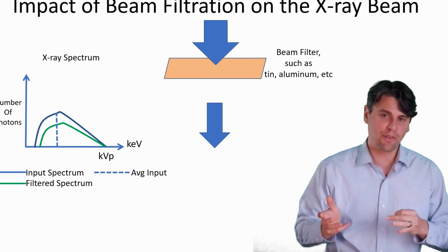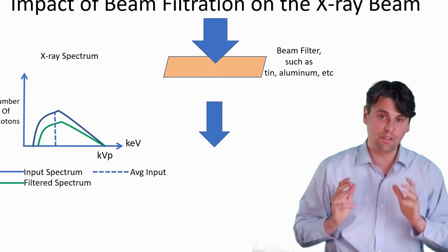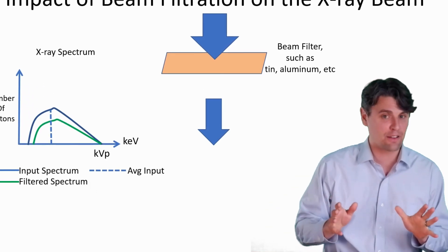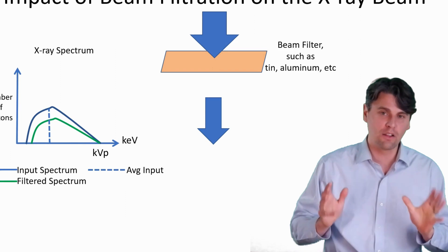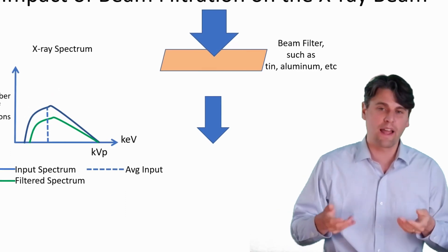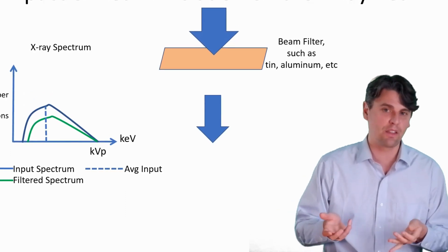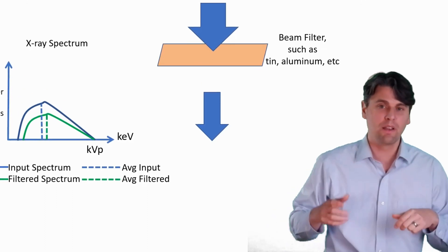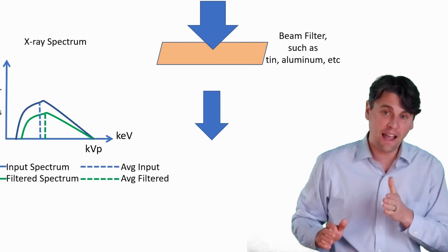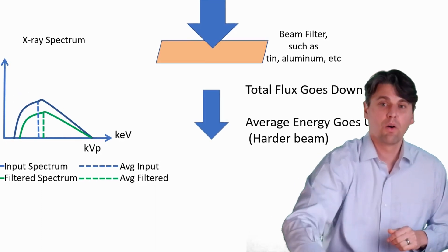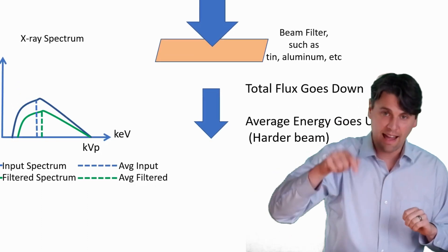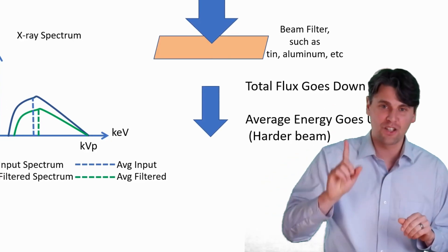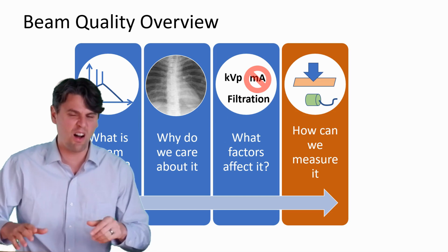So the output spectra for the x-rays after they pass through that thin sheet of metal is actually going to be less x-rays, right? So we call that lower flux or a lower exposure is going to be making it through. But if we look at the average energy of that beam, it's actually going to be higher now. So we have less x-rays, so lower flux, but higher average energy. Now you know the factors that affect beam quality as well.